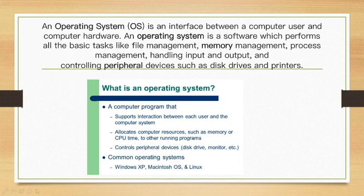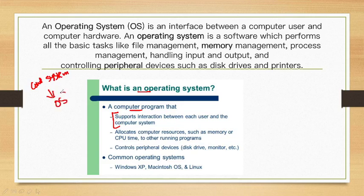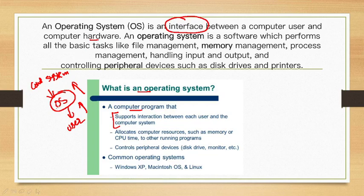So what is an operating system? It is a computer program that supports interaction between each user and the computer system. Now we have our computer system, and the operating system is required for the user to manage and interact with the computer. It is an interface between the user and the computer hardware.